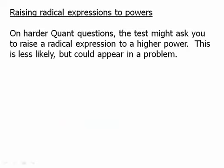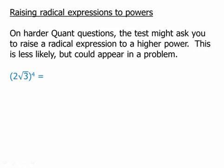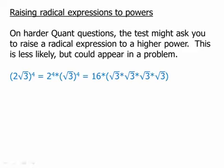On harder quant questions, the test might ask you to raise a radical expression to a higher power. For example, suppose we had (2√3)⁴. One way to approach this is just to apply that exponent of 4 to the two items separately. 2 to the 4th, that's 16. √3 to the 4th - anything to the 4th just means that thing times itself 4 times. √3 times √3 is 3. So really what I'll get in that parenthesis is 3 times 3, which is 9. And then 16 times 9 is 144. So that's one way to get to the numerical answer.